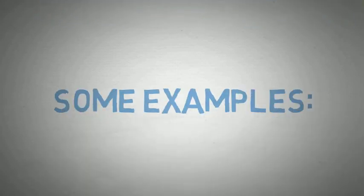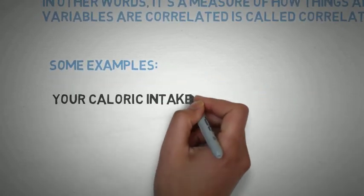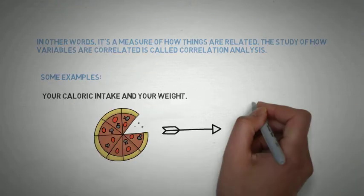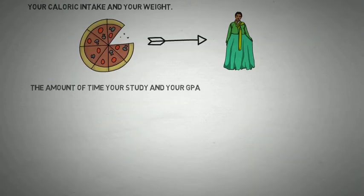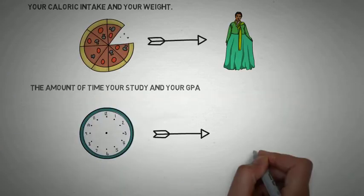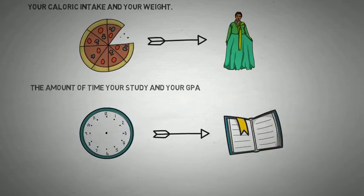Let's see some examples. Your caloric intake and your weight. The amount of food that you take is correlated to your weight. The amount of time you study and your GPA. The time you spend studying is correlated to your marks that you get in your exams.